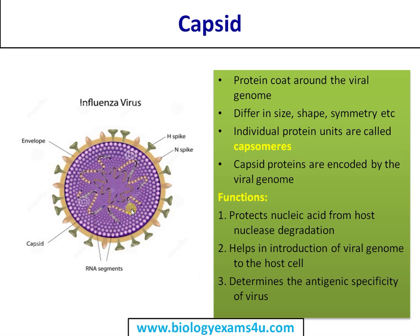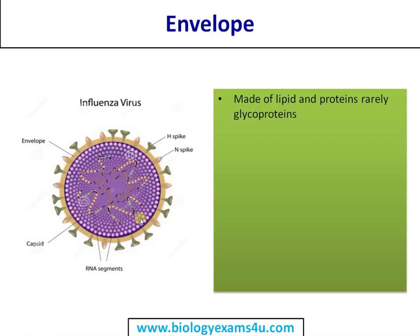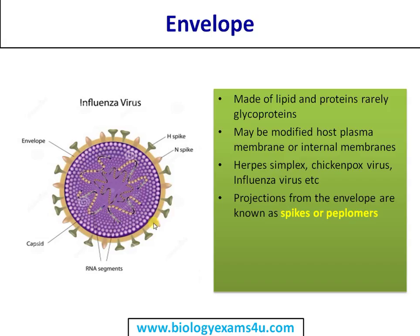In some viruses, apart from the capsid, there is an outer coat called the envelope, which is made up of proteins or rarely glycoproteins. It is often a modified host plasma membrane, as in the case of HIV. There are certain projections on the surface of the envelope called peplomers or spikes, which help in attachment during infection. HIV uses its spikes for attachment to the host cell. Thank you so much for your support.